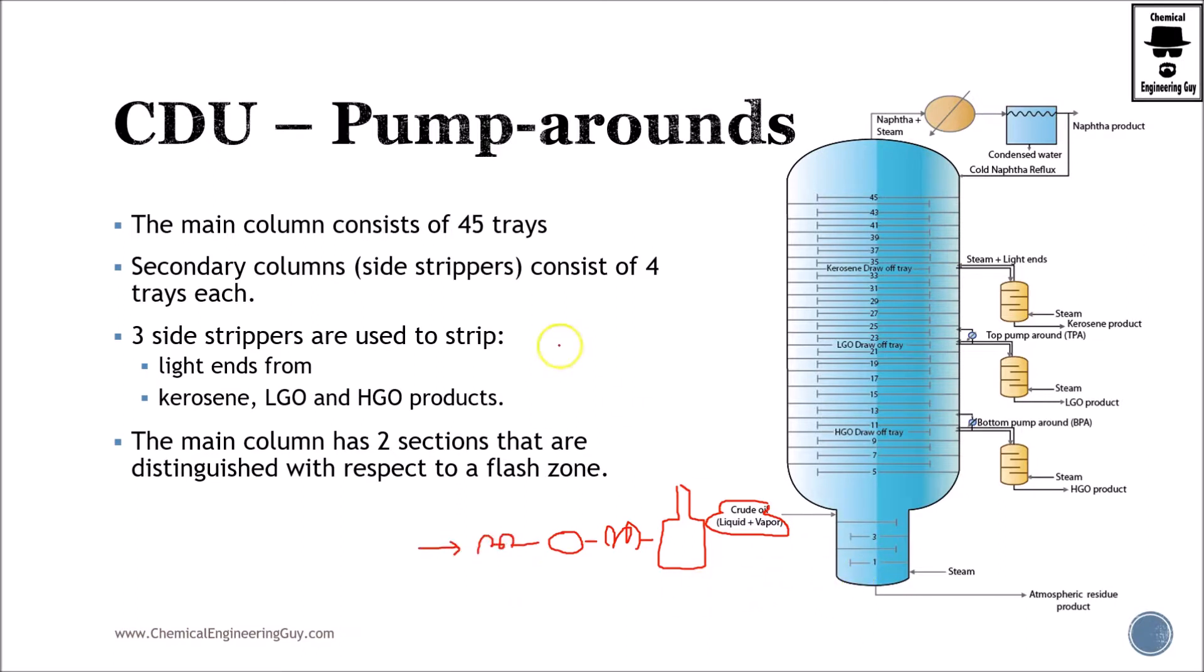The main column, you can see here in this specific example, has 45 trays. Secondary columns, which are the side strippers, are these yellow guys right here. Remember that each one of them will have its own steam addition. And of course we have the naphtha stabilization system, which is nothing more than removal of gases. In this example, removal of naphtha, which is technically the stabilized naphtha, and the reflux.